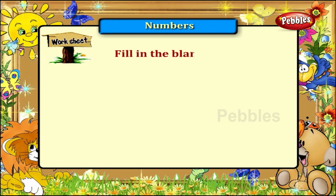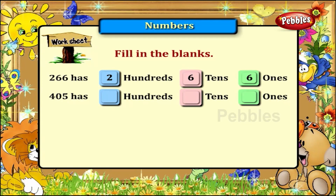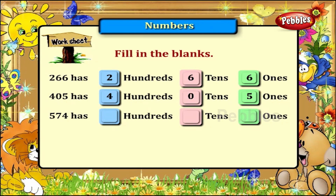Fill in the blanks. 266 has two hundreds, six tens and six ones. 405 has four hundreds, zero tens and five ones. 574 has five hundreds, seven tens and four ones.